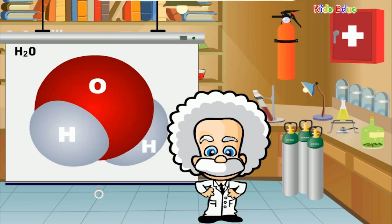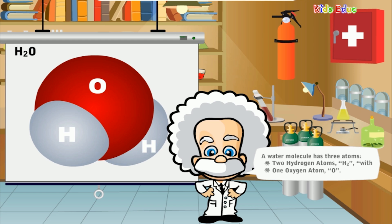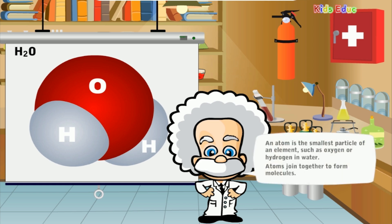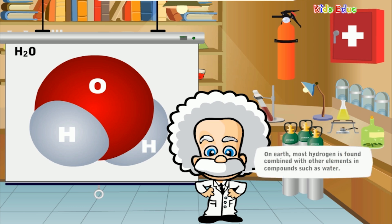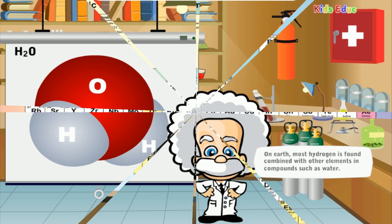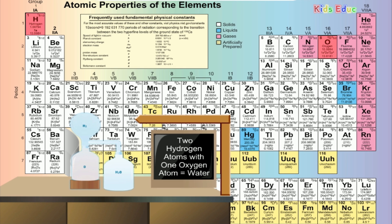So, what is water? A water molecule has three atoms: two hydrogen atoms (H2) with one oxygen atom (O). An atom is the smallest particle of an element, such as the oxygen or hydrogen elements in water. Atoms join together to form molecules. Because water consists of two hydrogen atoms and one oxygen atom, scientists write H2O as the chemical formula for water. On Earth, most hydrogen is found combined with other elements in compounds such as water.